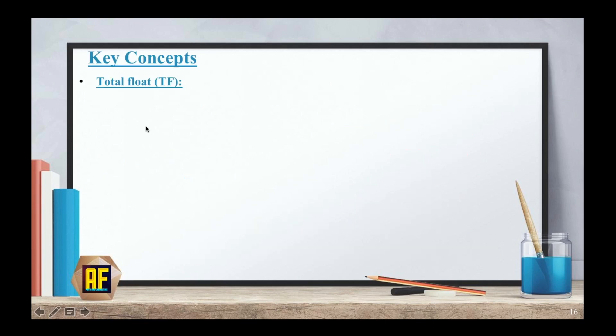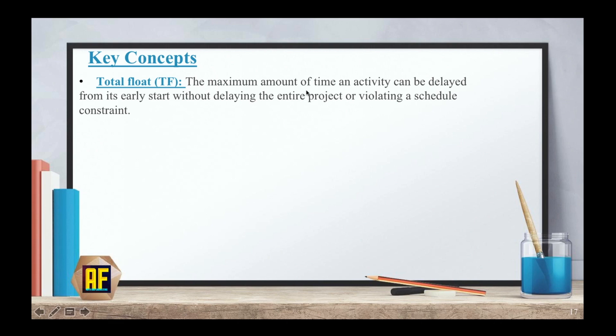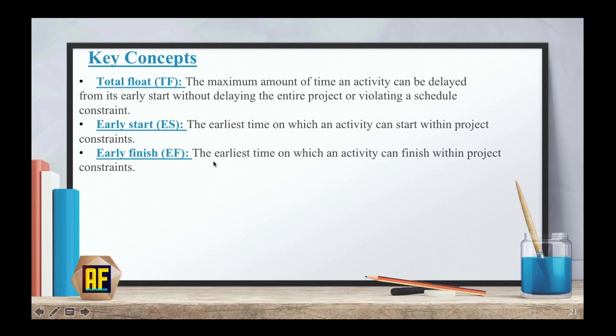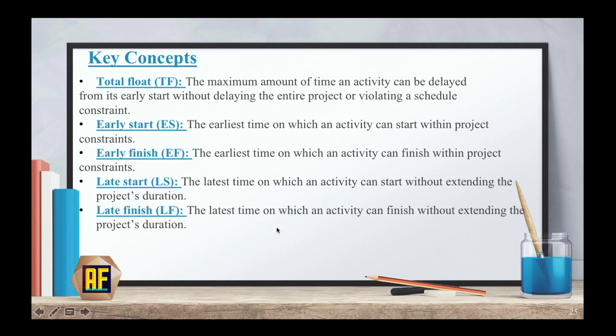Now, here are some key concepts. Total float: the maximum amount of time an activity can be delayed from its early start without delaying the entire project or violating a schedule constraint. Early start: the earliest time on which an activity can start within project constraints. Early finish: the earliest time on which an activity can finish within the project constraints. Late start: the latest time on which an activity can start without extending the project's duration. Late finish: the latest time on which an activity can finish without extending the project's duration.